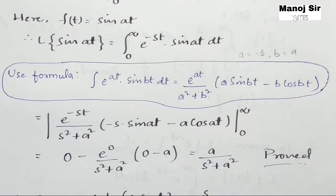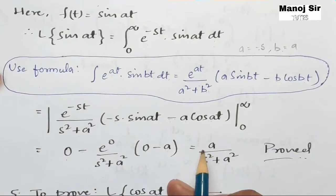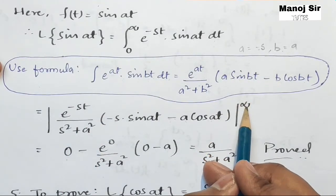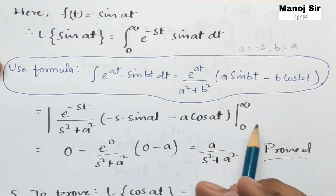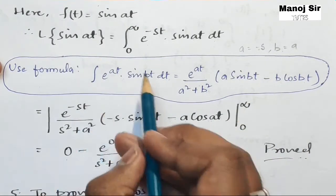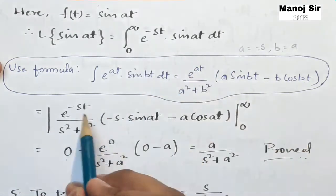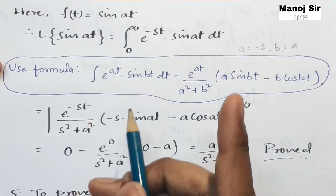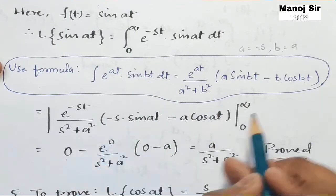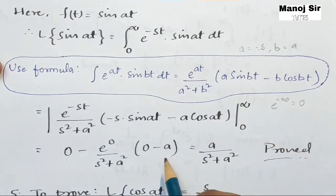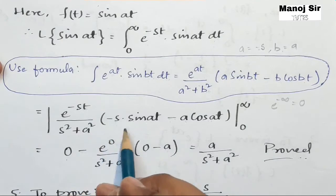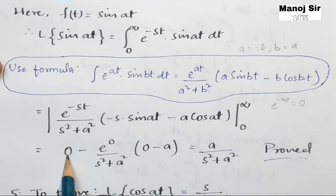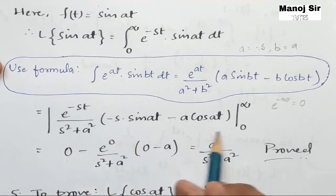By using this formula we have solved the integration. The limit is from zero to infinity — don't forget to put the limit. Now putting in the upper limit: we put infinity in place of t. This gives e to the power minus infinity, and we know that e to the power minus infinity equals zero. So zero into anything becomes zero, meaning the upper limit term vanishes.